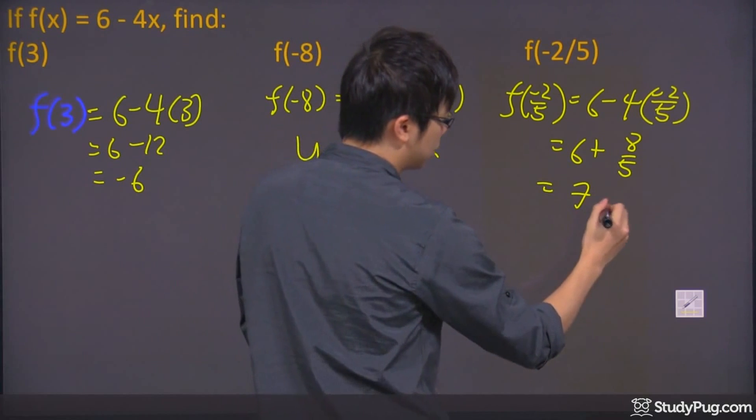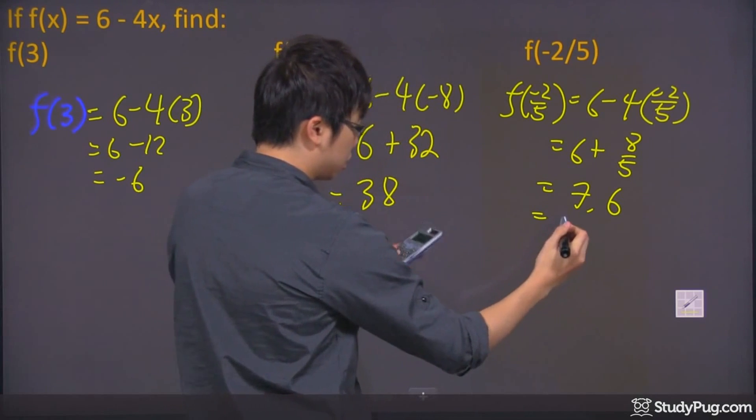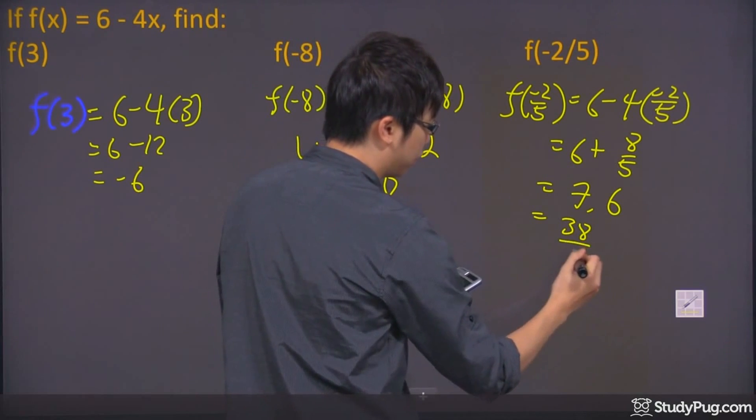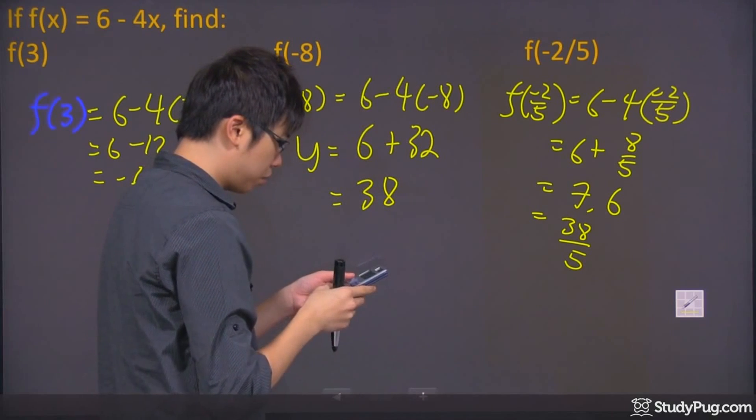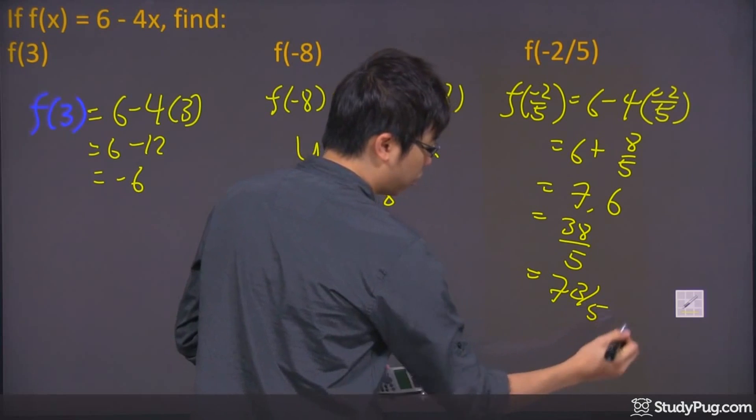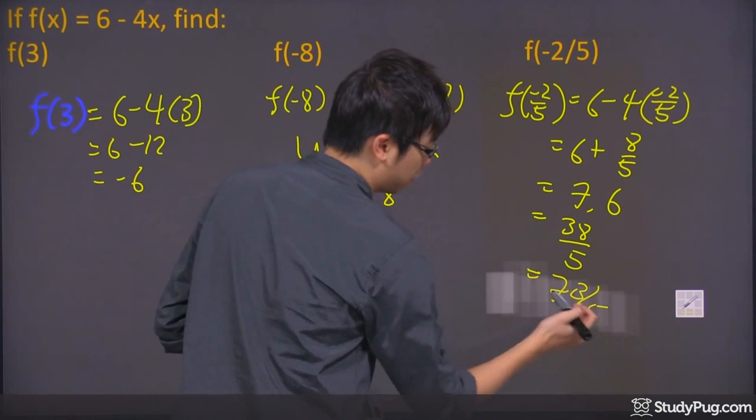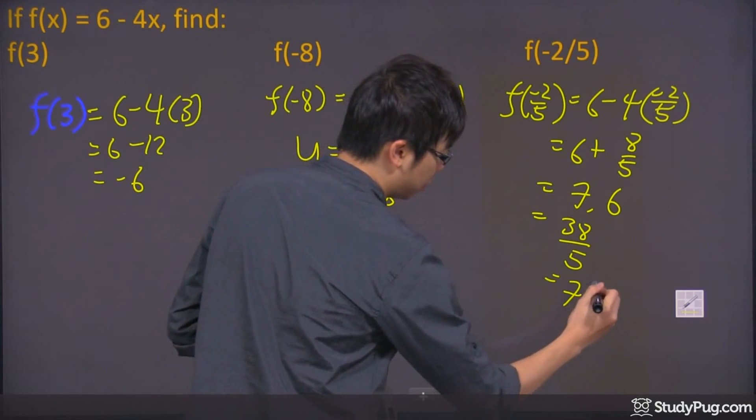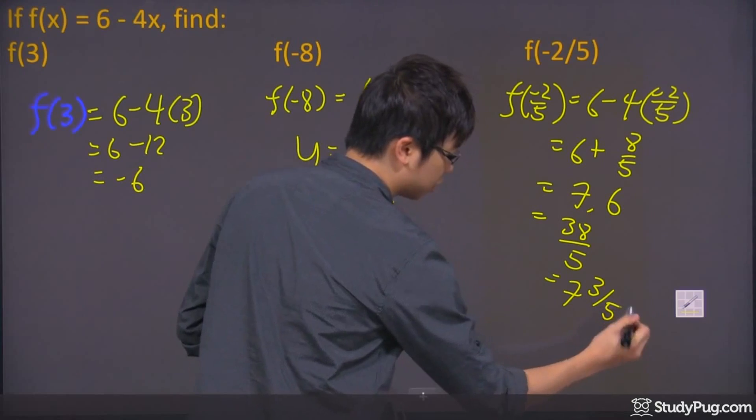I got 7.6. And if you don't like that, it's going to turn out to be 38 over 5. And of course, if you change it in proper fraction, it will also be 7 and 3 over 5. Let me rewrite that one more time. 7 and 3 over 5 on the side.